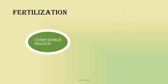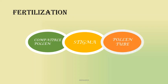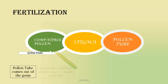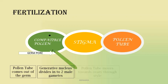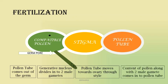Fertilization involves landing of compatible pollen on the correct stigma. Once the pollen is accepted by the stigma, a few events happen simultaneously. The first is that a pollen tube is formed, coming out of the germ pore. Two male gametes are formed, and as the pollen tube moves through the tissue of the style and reaches the ovary, the contents of the pollen along with the two male gametes move into the pollen tube, which then reaches the micropyle in the ovary.